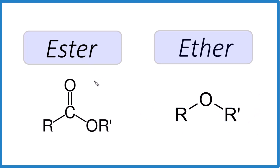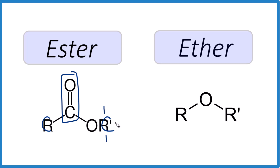For the ester, the first thing to look for is this carbonyl group — the double bonded oxygen. Then that carbon is going to have an oxygen connecting to the rest of the molecule, which is a carbon atom. Carbons are bonded to four things, so these could be hydrogens or other carbons on either side. The carbon with the double bonded oxygen also has a single bonded oxygen and then another carbon. That's your ester.